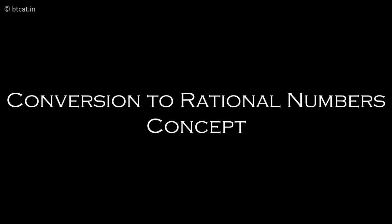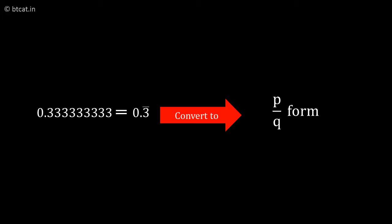Let's take the topic of conversion to rational numbers. We learned what rational numbers are earlier. Now we'll learn the trick for how to convert 0.33333, which is 0.3 bar, to p/q form.